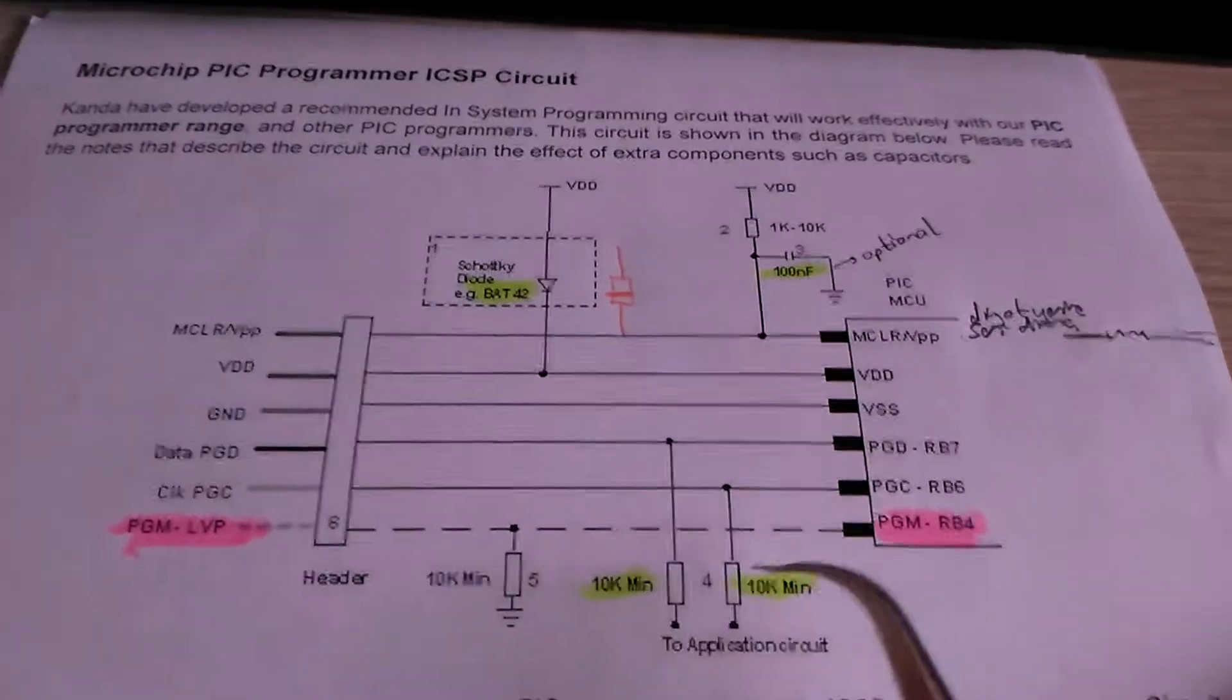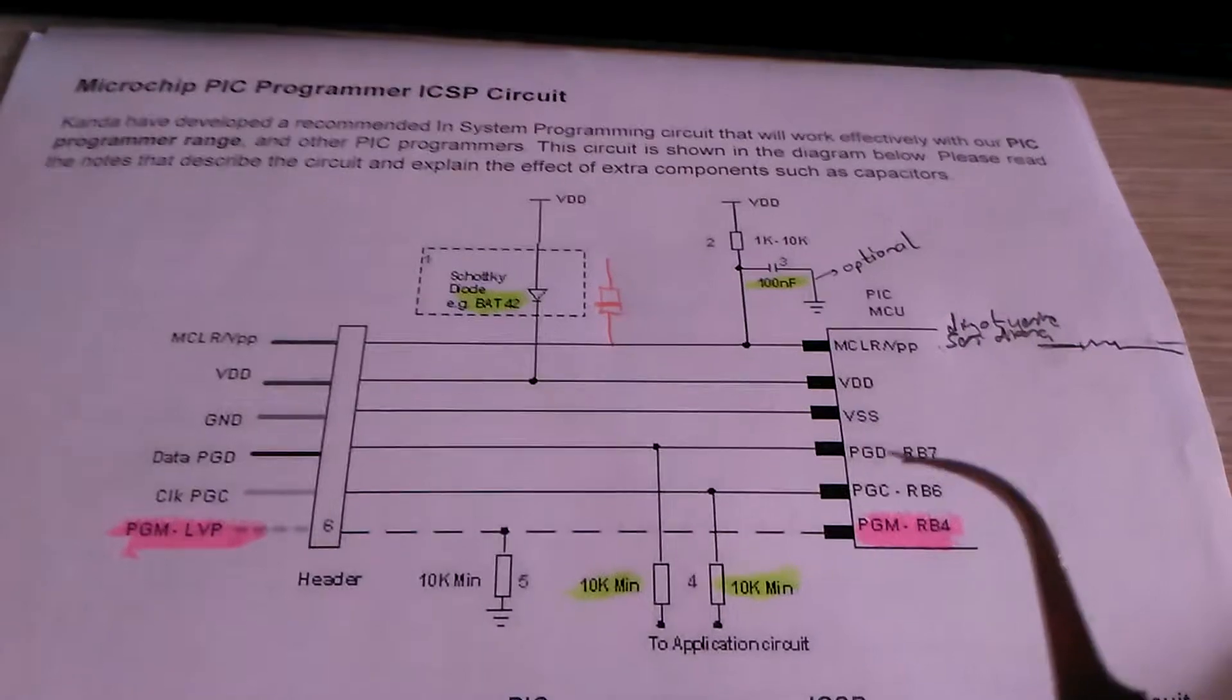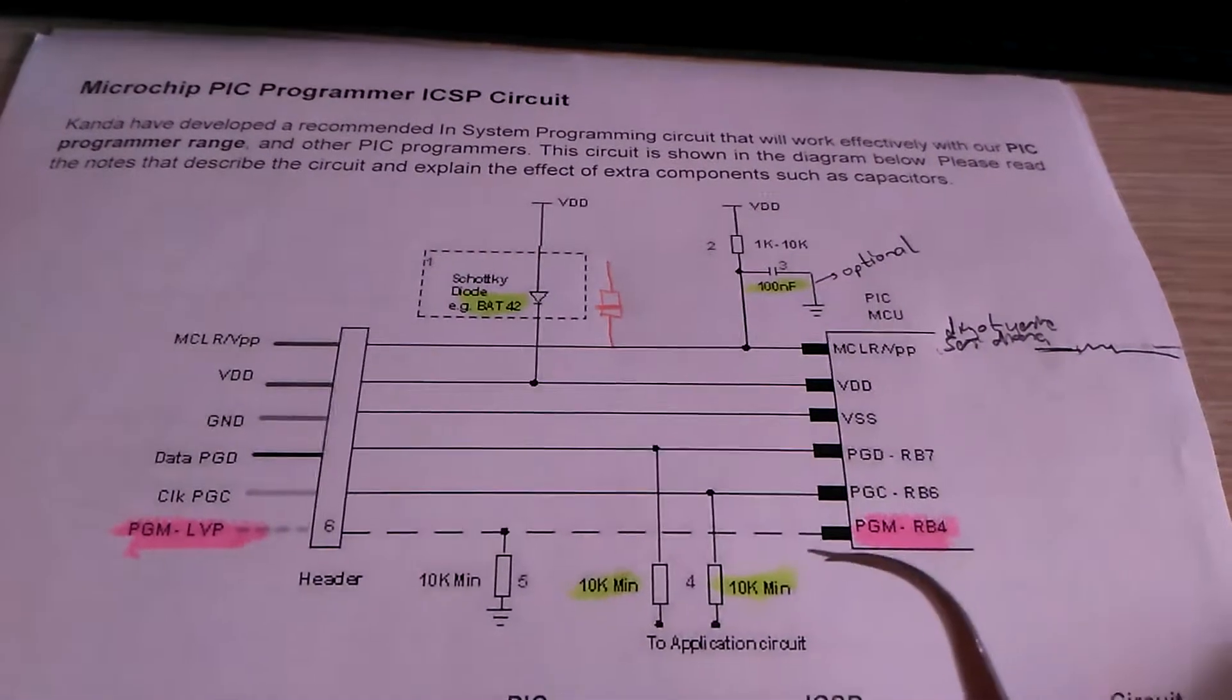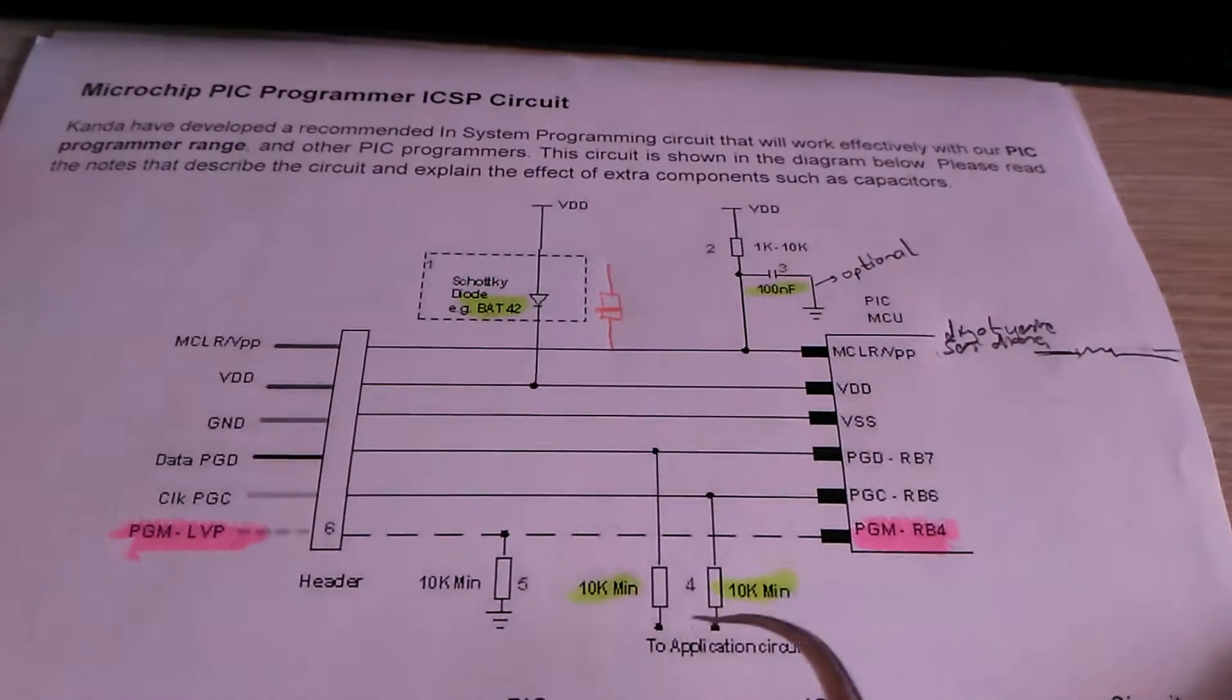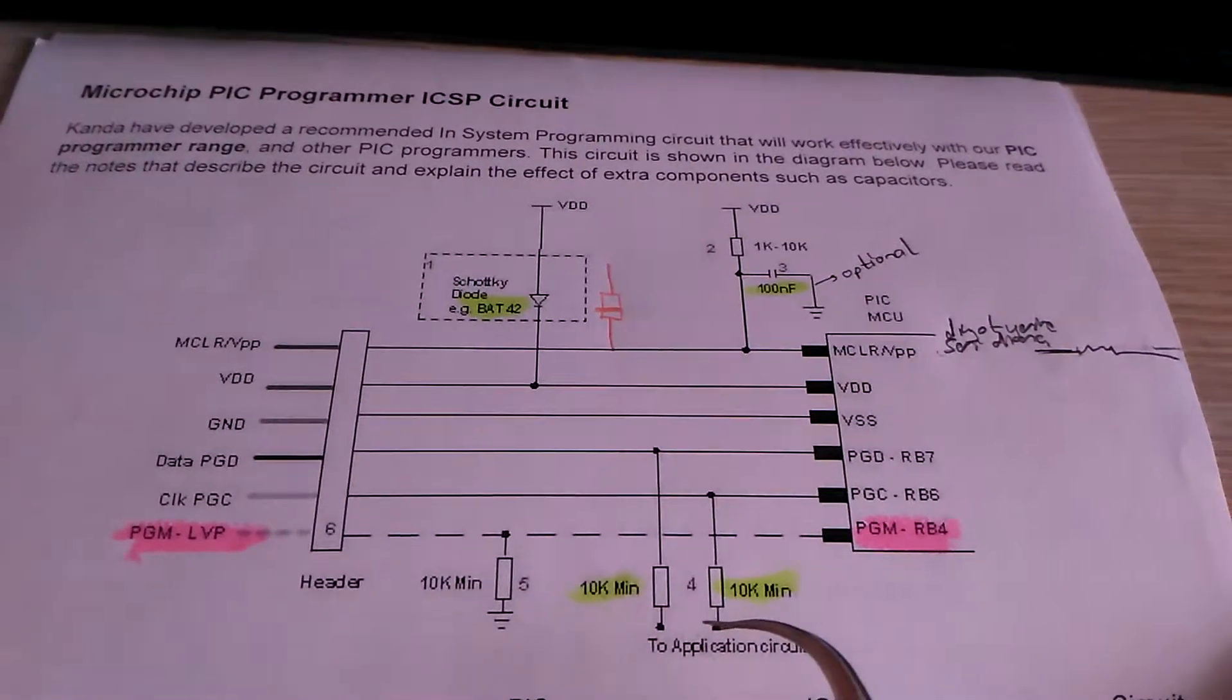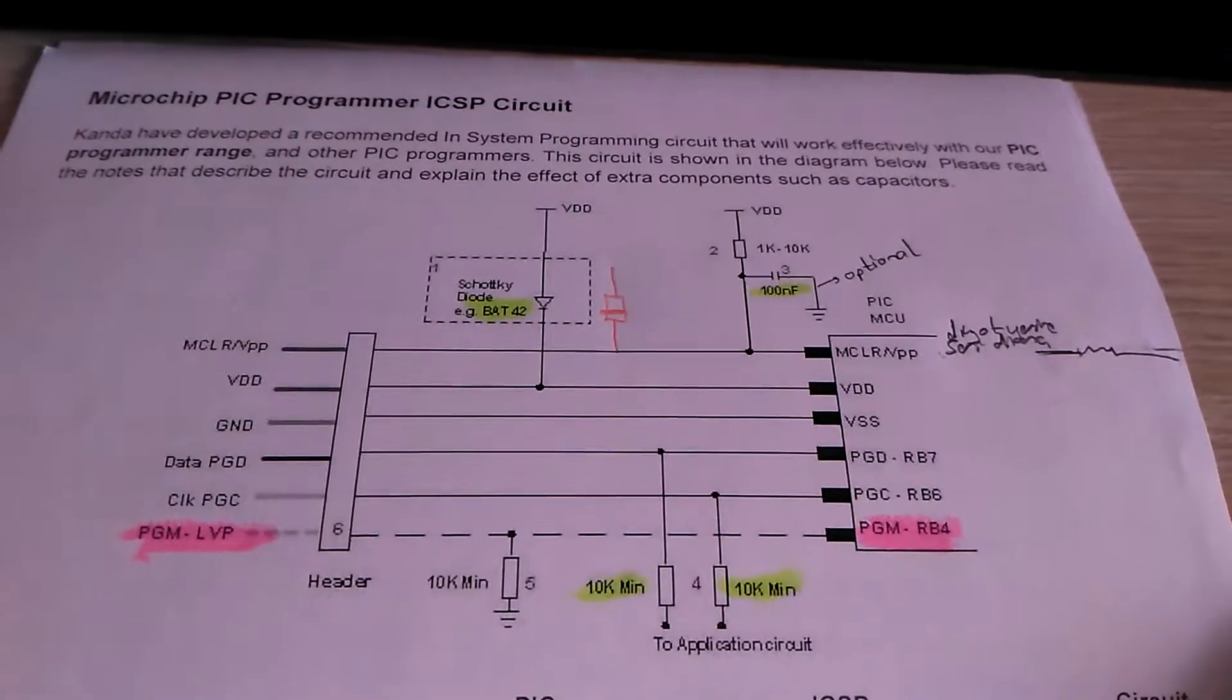If you use any pin PGD or PGC in the circuit, you need 10kΩ isolation resistors to save the circuit when entering programming mode.